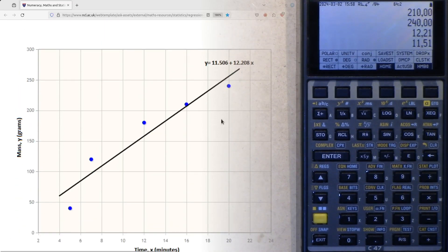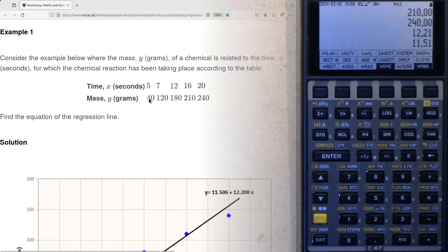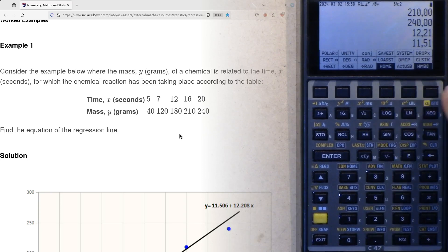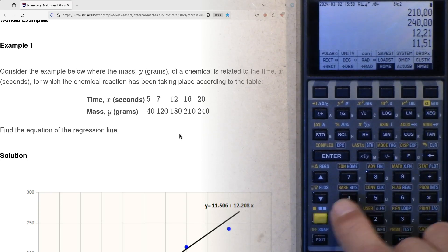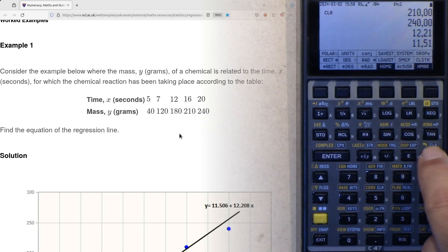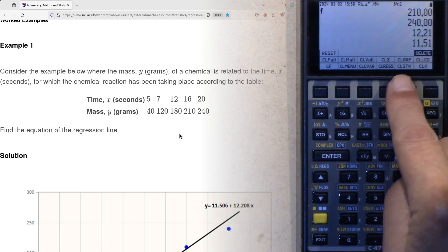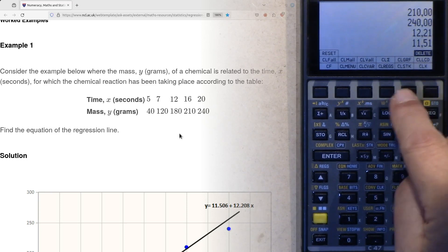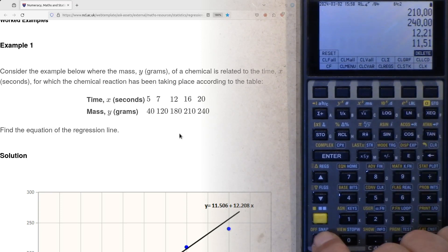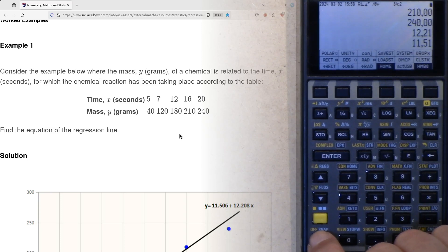We see the data points here and we have the table which we have to enter now. First thing to do is that we double press shift in order to get the clear menu, and here I clear now the sigma data points. This was step one.